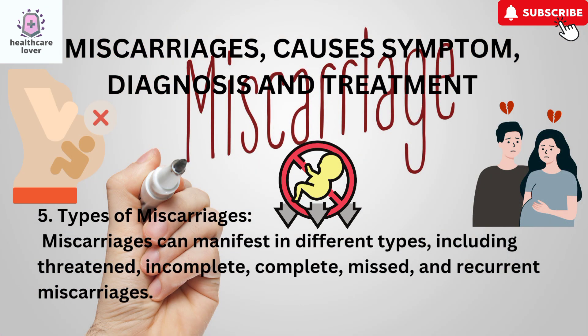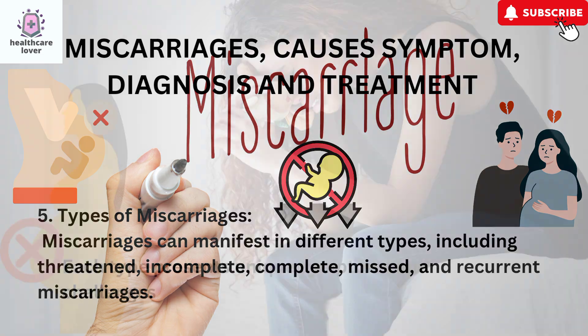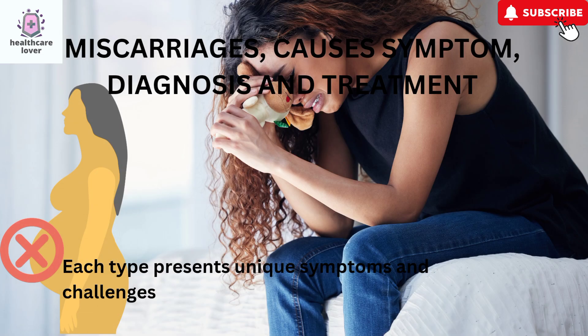Types of Miscarriages. Miscarriages can manifest in different types, including threatened, incomplete, complete, missed, and recurrent miscarriages. Each type presents unique symptoms and challenges.